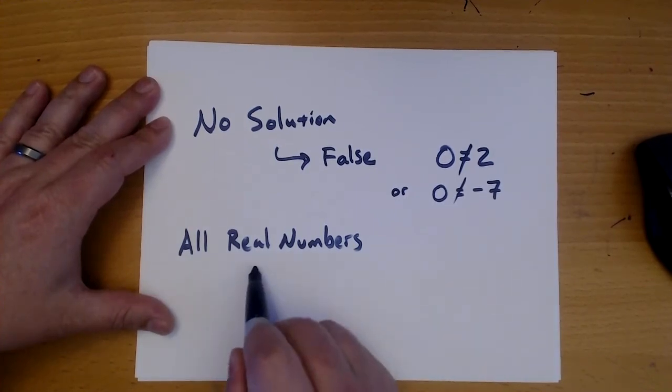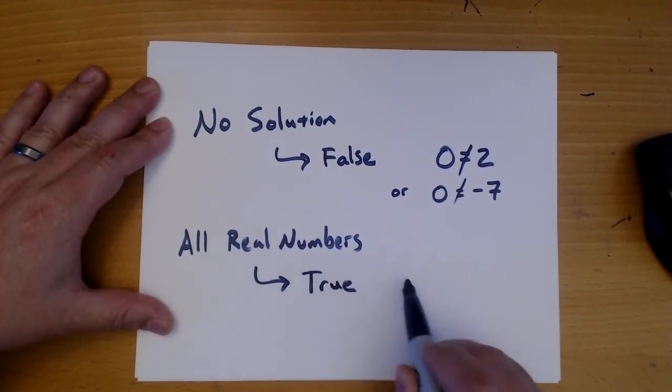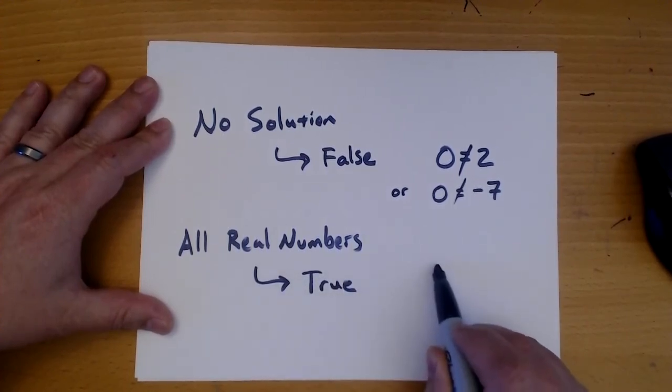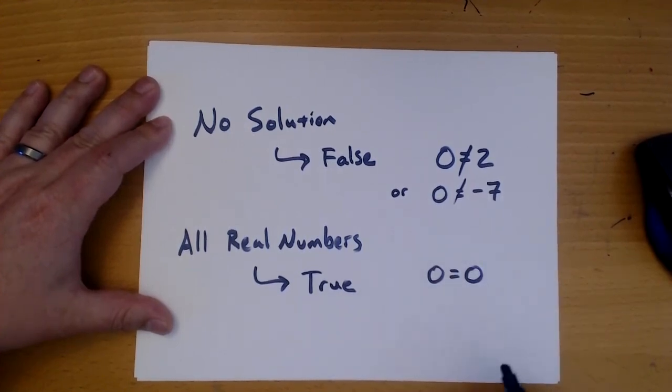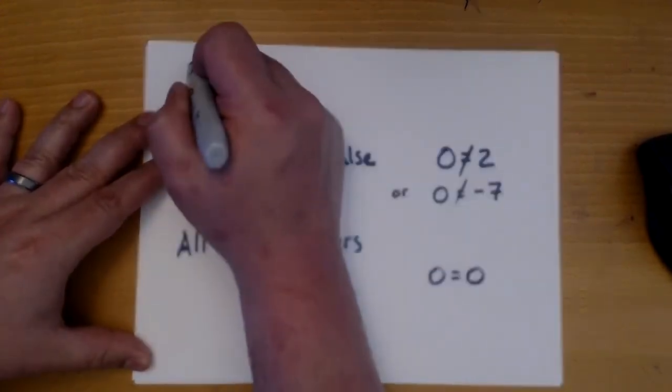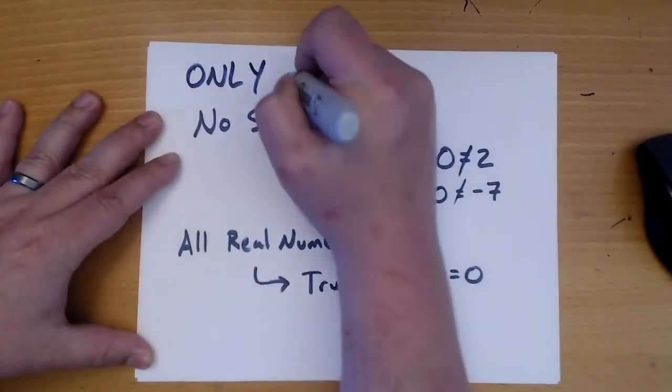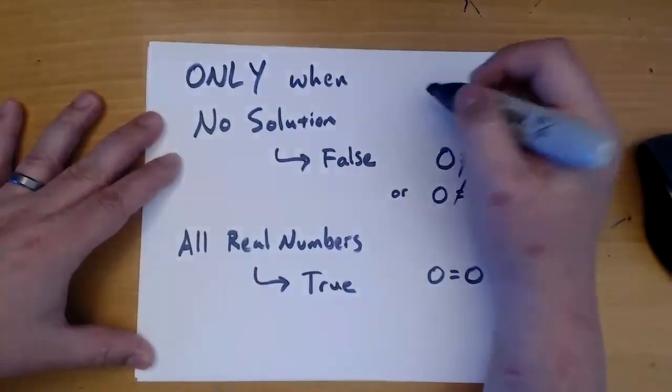And you get an answer of all real numbers when you get something that is true, like 0 equals 0. Okay? But these only happen when all of your variables are gone.